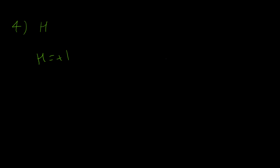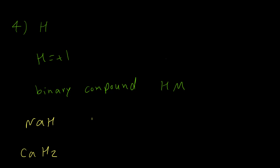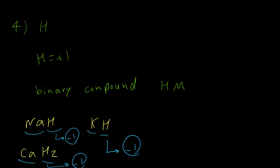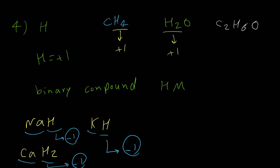Rule number 4 is about hydrogen. In all covalent compounds, hydrogen has a +1 oxidation number. But there is an exception: if we have a binary compound between hydrogen and metals, like sodium hydride, calcium hydride, or potassium hydride, then hydrogen will be -1. In any other compound, hydrogen is +1. For example, CH4: hydrogen is +1. In water: hydrogen is +1. In acetone: hydrogen is +1.